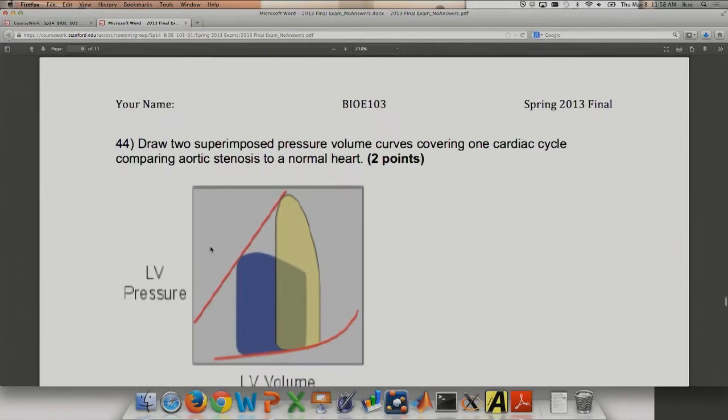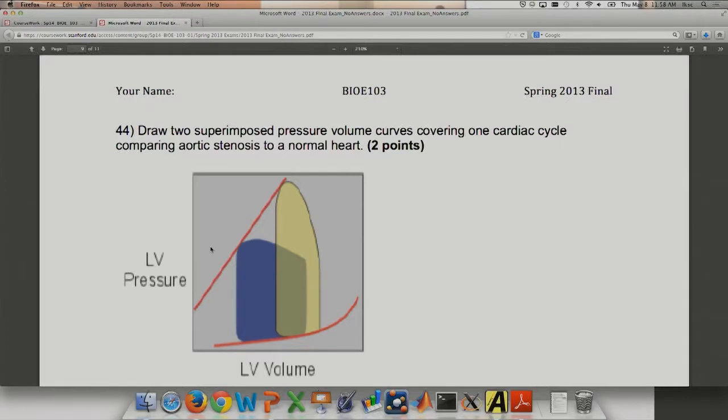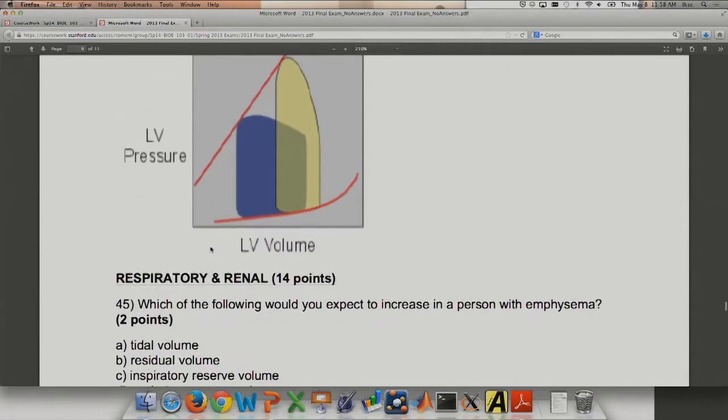Draw two superimposed pressure volume curves covering one cardiac cycle comparing aortic stenosis to a normal heart. A fairer question would have been to give you a normal loop and have you just draw a superimposed loop for the aortic stenosis. So assume the blue one was given. We know that aortic stenosis causes less blood to be ejected and heart has to work harder. So you see the stroke volume decreases and the pressure increases, so the loop becomes thinner and taller in aortic stenosis. It's also in lecture.